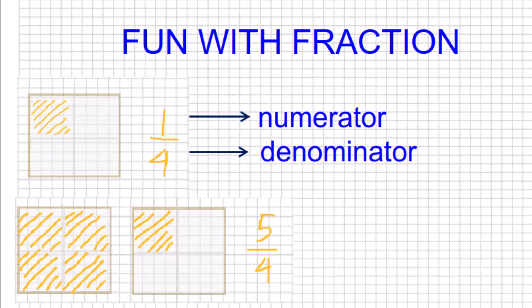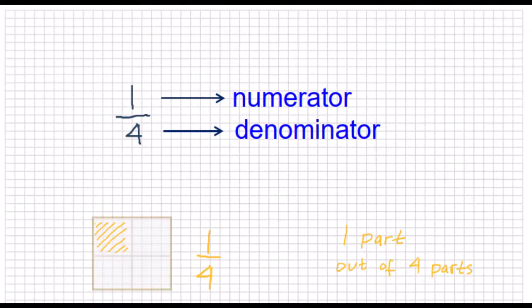Welcome to MD. In this video we will learn about fractions. A fraction consists of two numbers written like this. The number on the top is called the numerator and the number on the bottom is called the denominator.